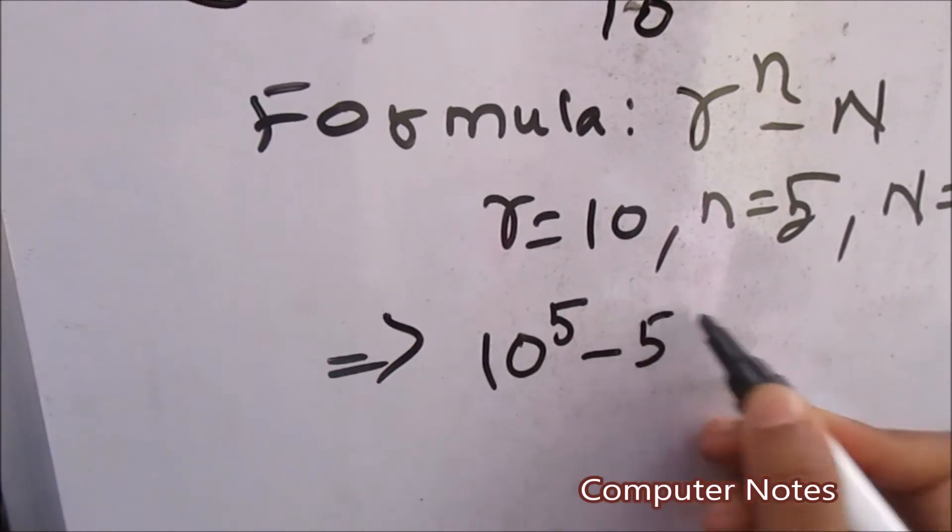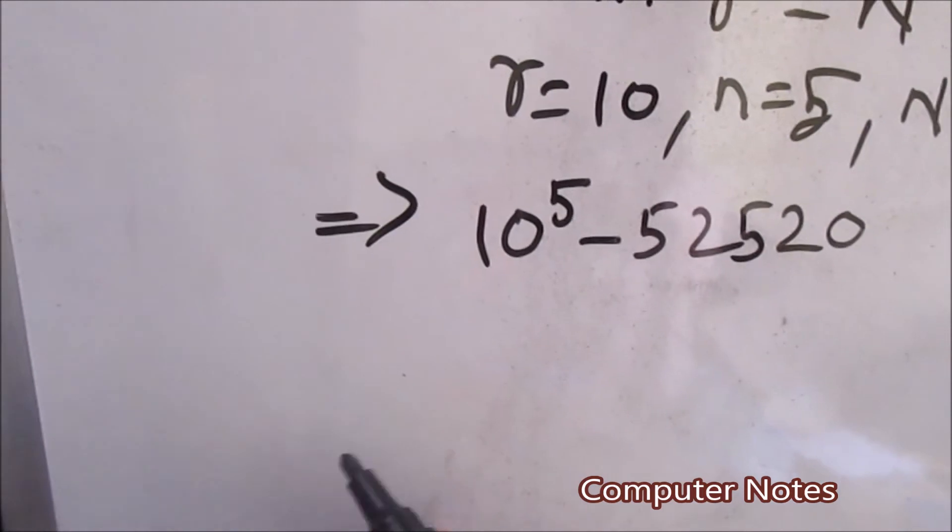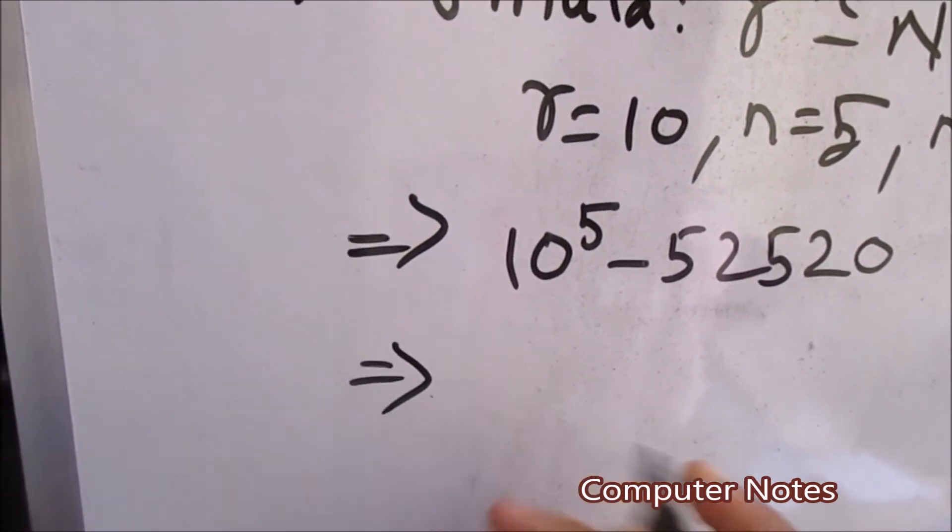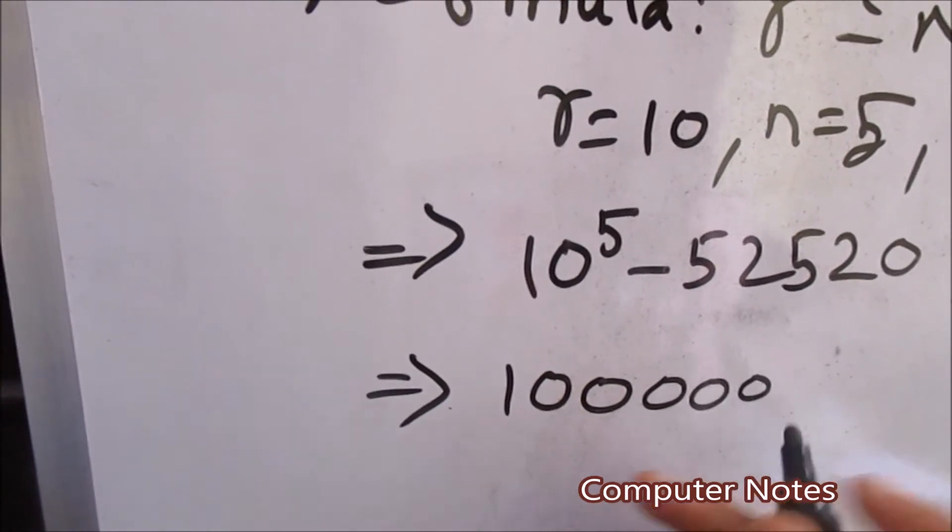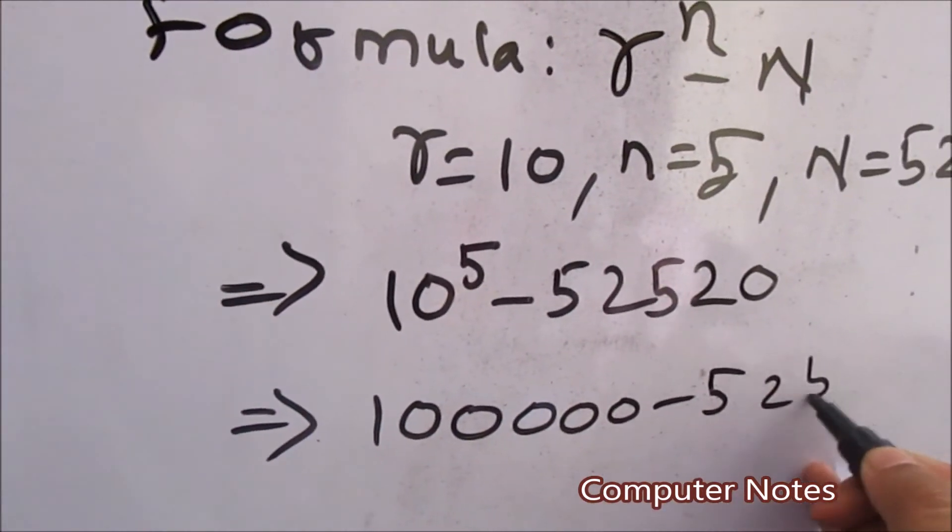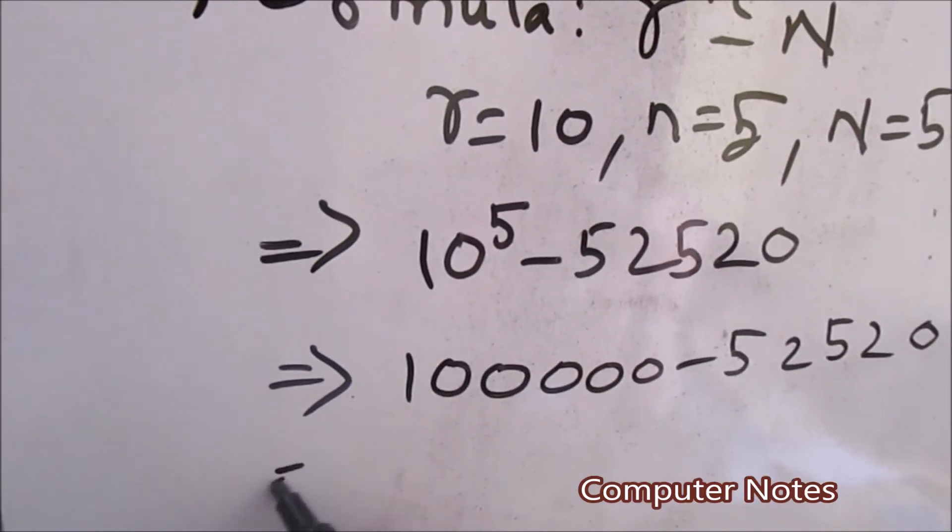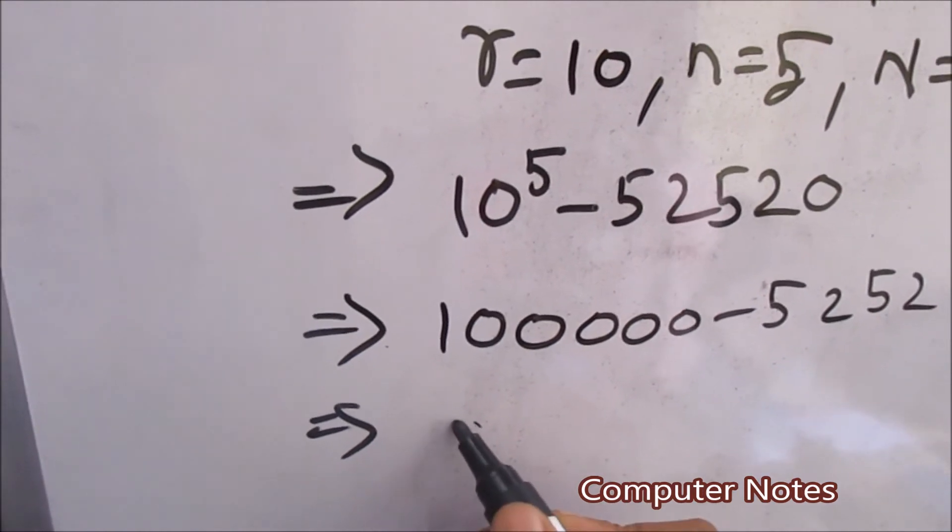Then after that, 10 power 5, which is 100000, five zeros, one two three four five, minus 52520.